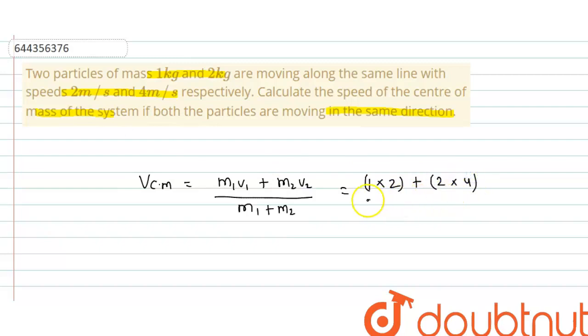So this equals 2 plus 8, 10 upon 3 meter per second. So I hope you have understood the explanation, thank you.